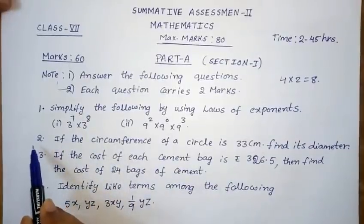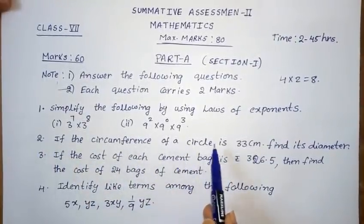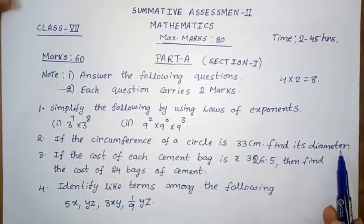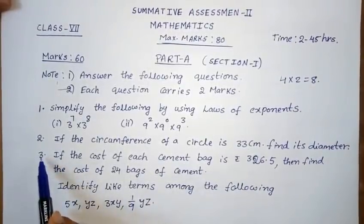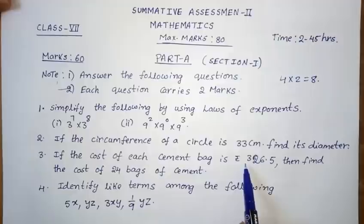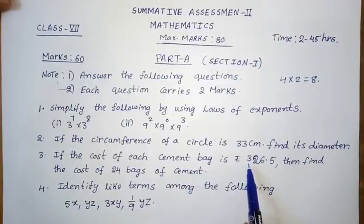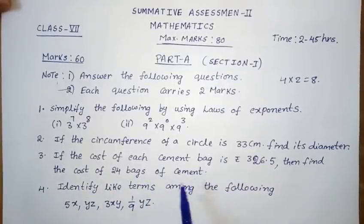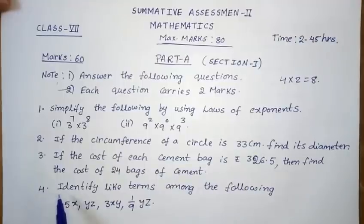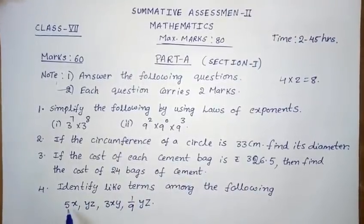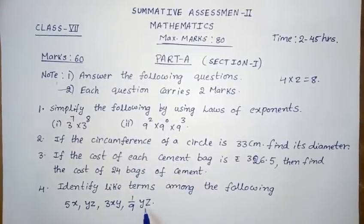Second question: If the circumference of a circle is 33 centimeters, find its diameter. Third question: If the cost of each cement bag is 326.5 rupees, then find the cost of 24 bags of cement. Fourth question: Identify like terms among the following — 5x, yz, 3xy, 1/9 yz.